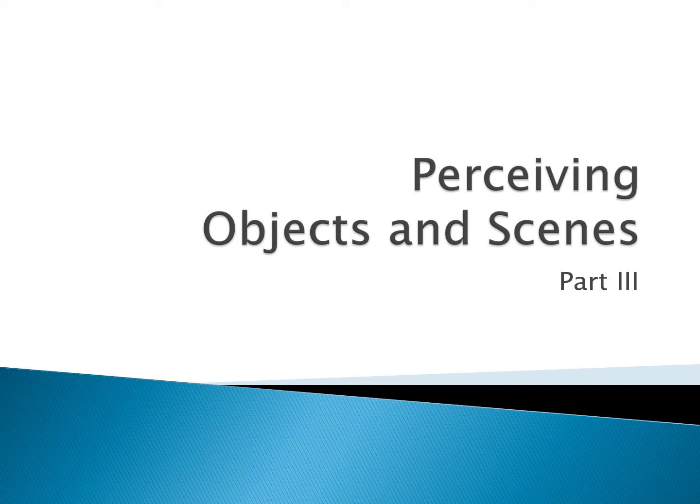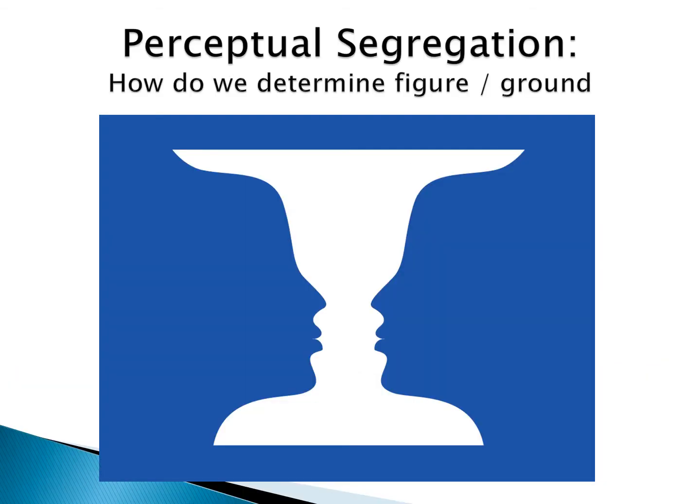I ended up really having to break it off there in the middle of perceiving objects and scenes. We were talking about the Gestalt principles of perceptual organization, and some of these principles also influence how we segregate the perceptual scene. So how do we determine figure — what is the figure or the thing that I'm looking at — from the ground, from the background?